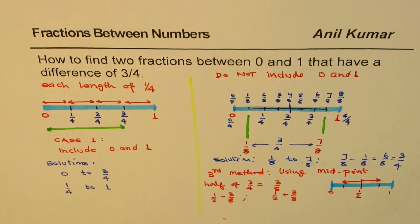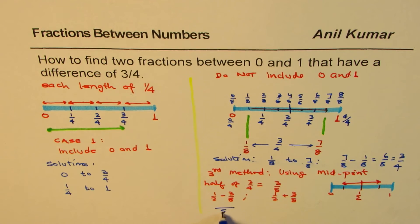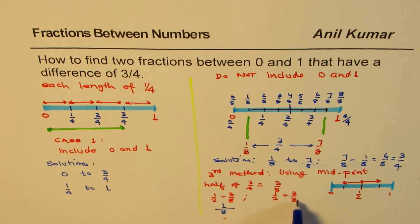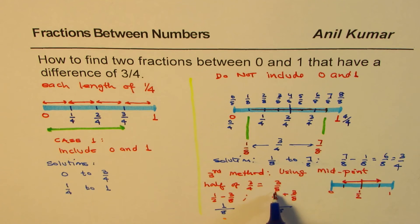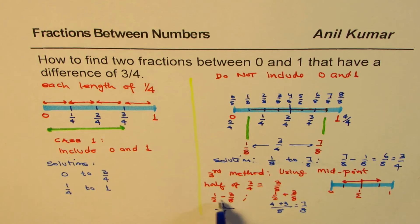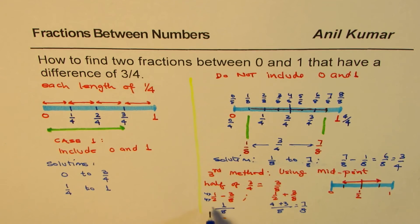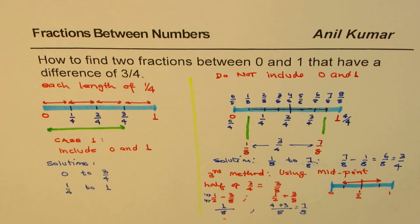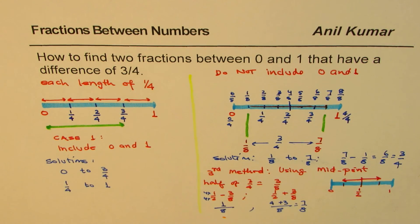So one number is half minus 3 by 8, and the other is half plus 3 by 8. With a common denominator of 8, half minus 3 by 8 becomes 4 minus 3, which is 1 eighth. And half plus 3 by 8 becomes 4 plus 3, which is 7 out of 8. So the two numbers are 1 eighth and 7 eighths — the same answer we got in Case 2. This is a very good method by which you can always find any two fractions between any two points with a given difference. I'm Anil Kumar and I hope that helps. Thank you and all the best.